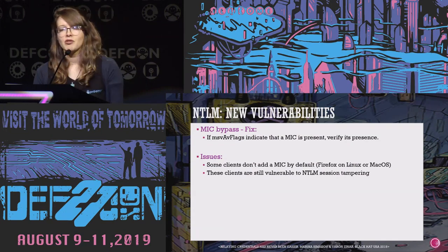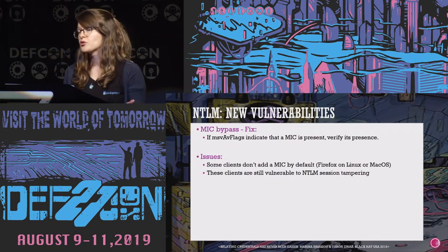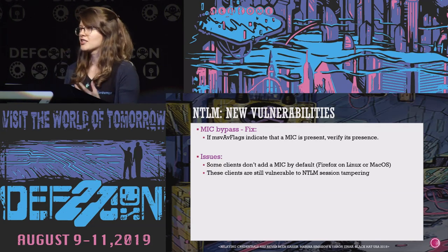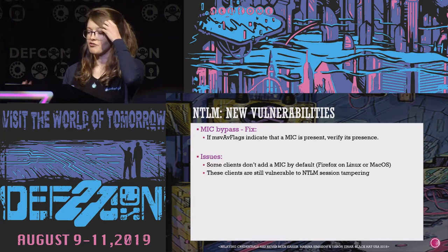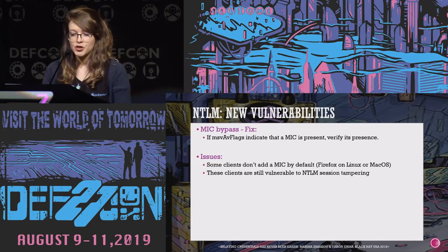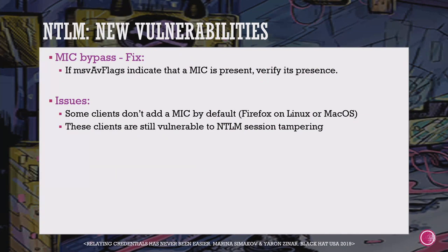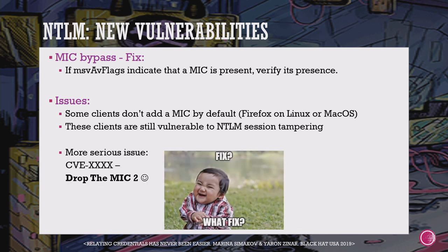The fix: since there is an AV pair 'flags' attribute in the NTLM authenticate message whose second bit indicates the client is providing a MIC, all Microsoft needed to do was have servers verify that if they receive a flags value indicating a MIC is present, they verify one actually is. Some issues remain: clients like Firefox on Linux or Mac OS don't add a MIC by default, so those clients remain vulnerable to NTLM session tampering. More seriously, we have a bypass we call Drop the MIC 2 which Microsoft hasn't patched yet — a blog is coming in a couple of days.